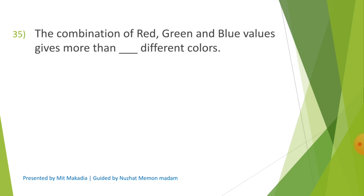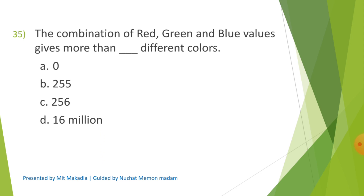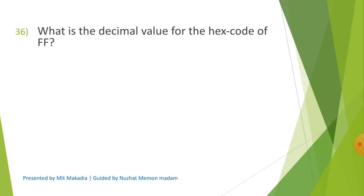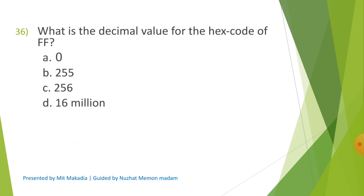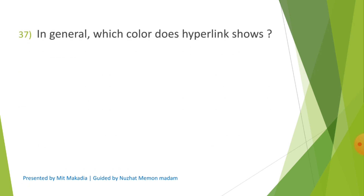Question 35: The combination of red, green, and blue values gives more than dash different colors. Options are A) 0, B) 255, C) 256, D) 16 million. The correct answer is D) 16 million. Question 36: What is the decimal value for the hex code of FF? Options are A) 0, B) 255, C) 256, D) 16 million. The correct answer is B) 255. Question 37: In general, which color does a hyperlink show? Options are A) Red, B) Green, C) Blue, D) Black. The correct answer is C) Blue.